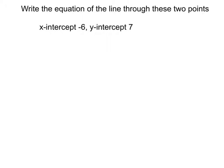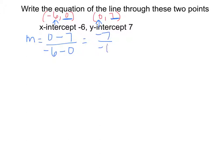We're going to write the equation of the line through two points. The way points are described here has a tendency to throw people off. Keep in mind the x-intercept is actually the point negative six, zero, and the y-intercept is actually the point zero, seven. Anytime you write an equation of a line, always start with the slope. So m equals zero minus seven over negative six minus zero, which gives negative seven over negative six — a negative divided by a negative is positive — so my slope is seven-sixths.